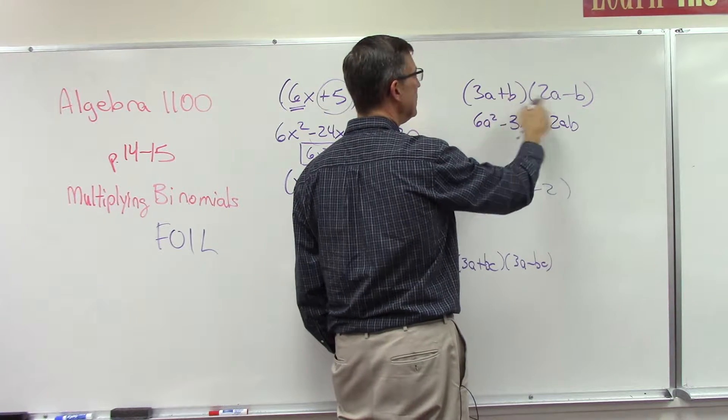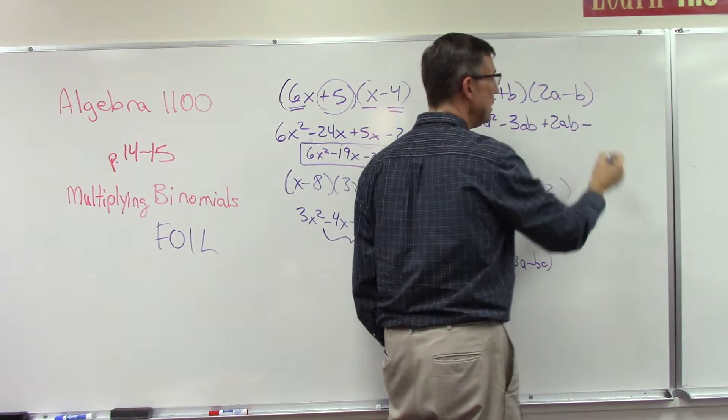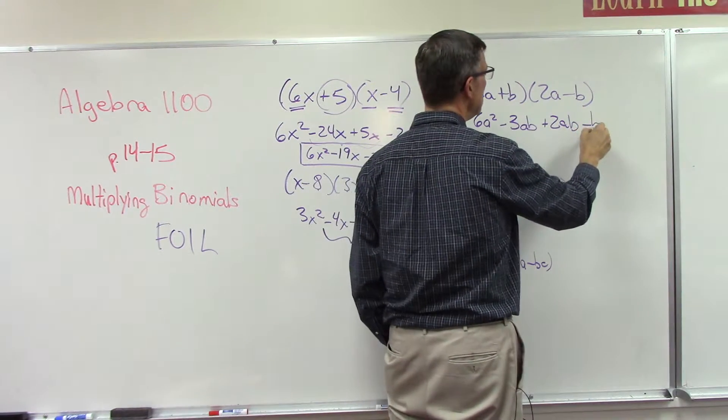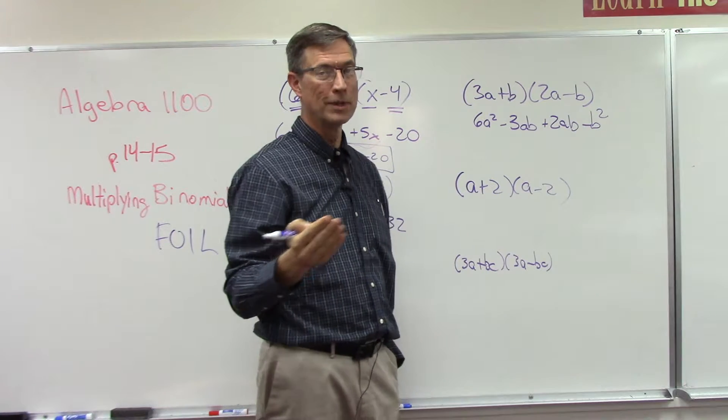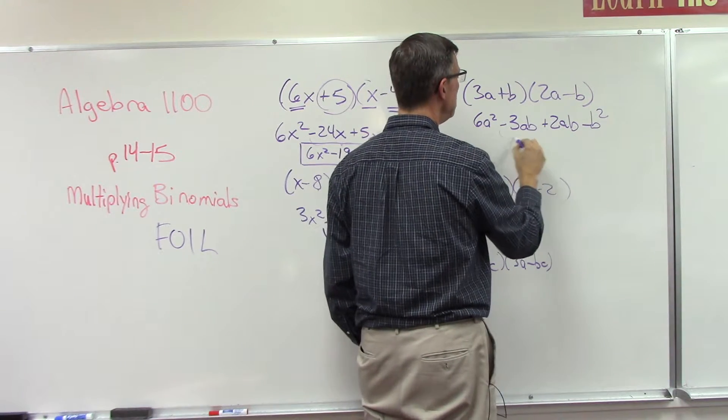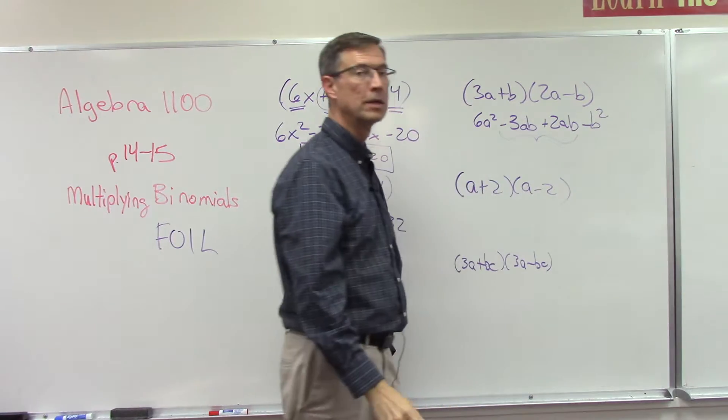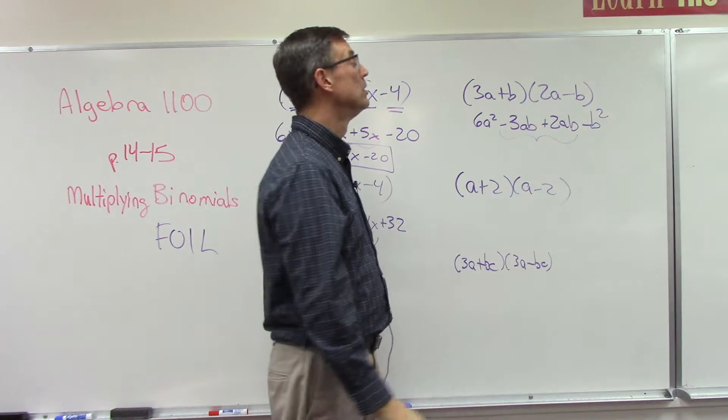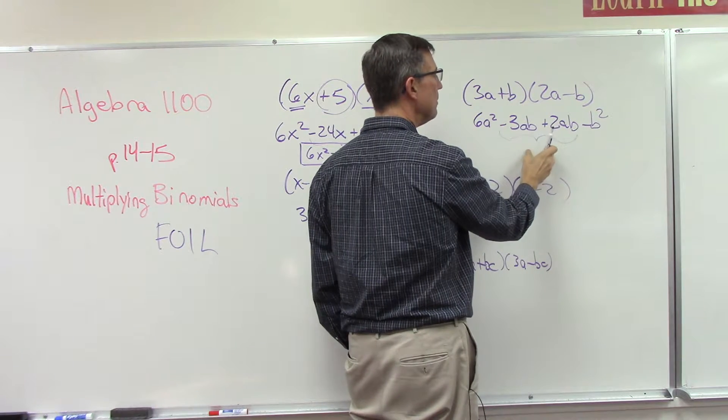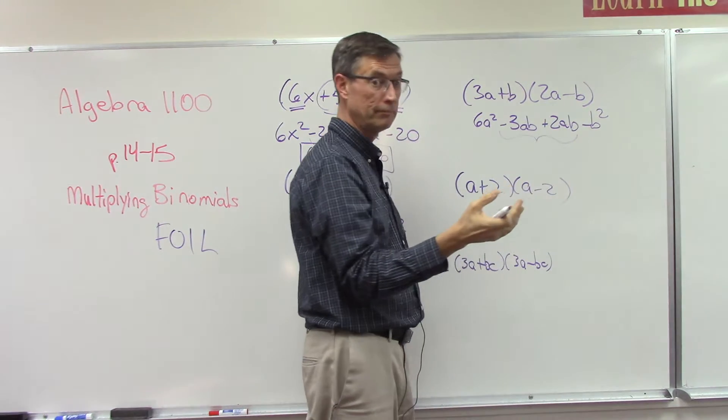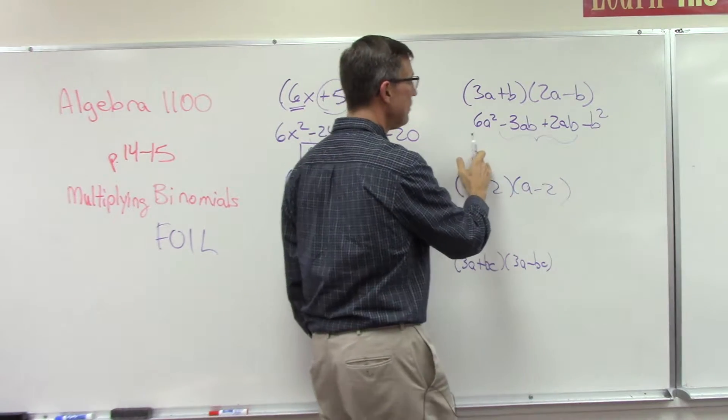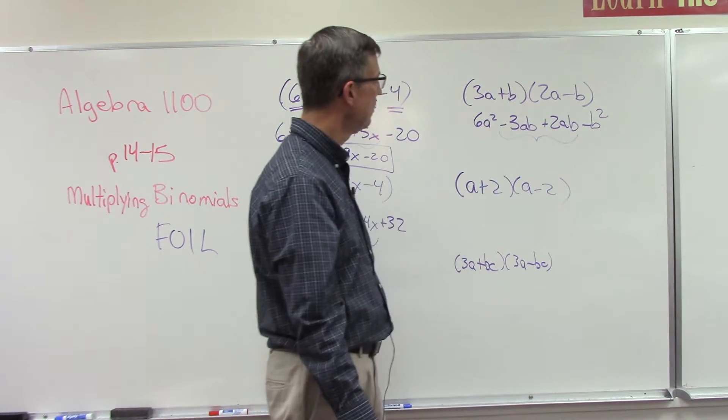And then positive times negative means the answer will be negative, and b times b gives you b squared. Notice, and this will happen every time you do this, that these middle two terms should be like terms. So negative 3ab plus positive 2ab, you can combine them. Subtract this model from the larger, keep the sign of the larger, and have three terms in your final answer. I'll let you finish that one.